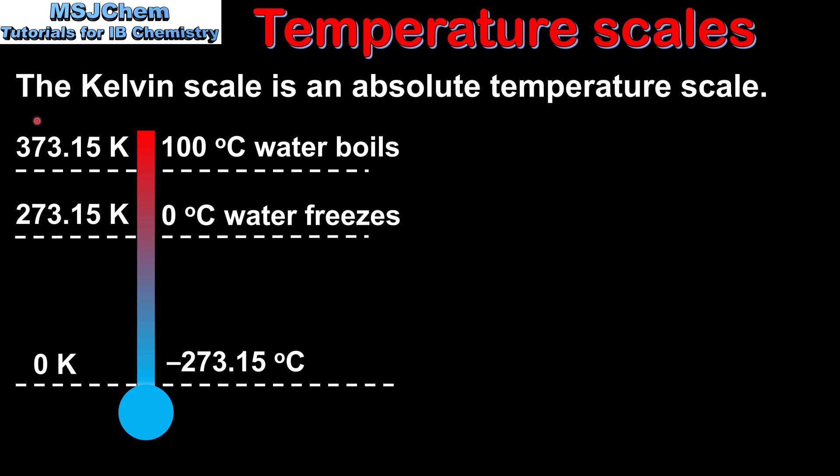The Kelvin scale is what we call an absolute temperature scale, which basically means the lowest possible value on the Kelvin scale is 0 Kelvin. Unlike the Celsius scale, you cannot have a negative Kelvin value, so temperatures in Kelvin are always positive. We start at the bottom which is 0 Kelvin, also known as absolute 0, which is minus 273.15 degrees C.